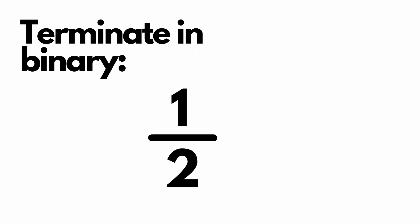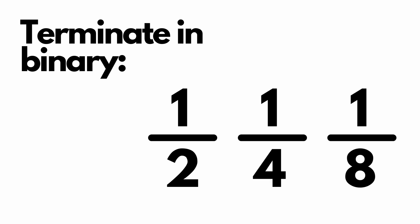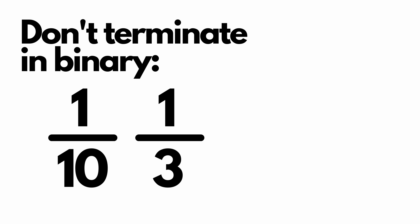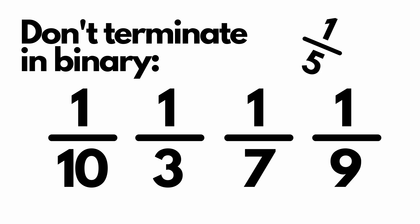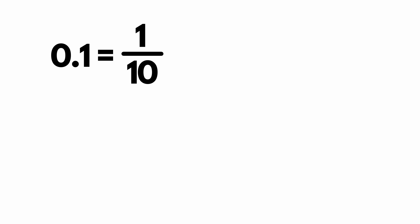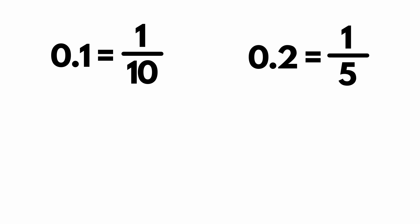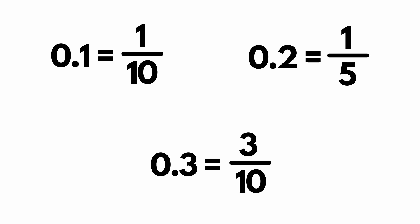The same thing happens to 1/10 in binary. Here our base is 2, and it has only one prime factor: 2. So the only fractions that terminate in binary have denominators that are powers of 2 — things like 1/2, 1/4, 1/8, and so on. But fractions like 1/10, 1/3, 1/7, 1/9, or 1/5 — all these fractions do not terminate in binary. So no matter what you do, the decimal number 0.1 (which is 1/10), 0.2 (which is 1/5), and 0.3 (which is 3/10) are all infinitely repeating fractions in binary, so they're all going to get rounded when you store them in computer memory.